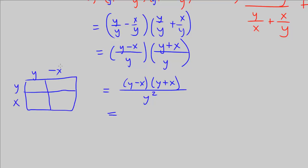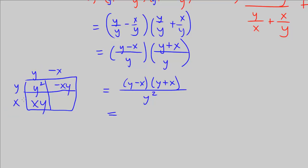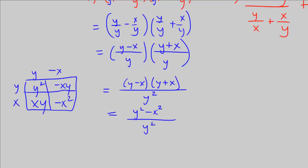We want to multiply y minus x times y plus x. So y times y is y squared, negative xy here, y times x is xy, x times negative x is negative x squared. These two middle terms cancel out because they are opposites, so we're left with just y squared minus x squared.